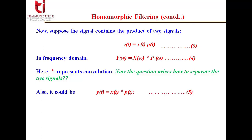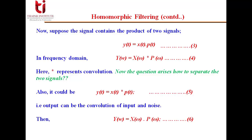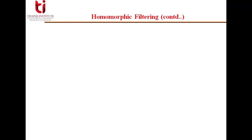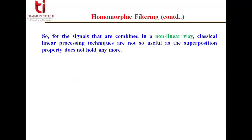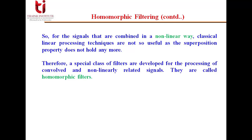Similarly, if two signals are convolving together — x(t) convolved with p(t) giving y(t) — then in the frequency domain this becomes multiplication. For signals combined in a non-linear way, classical linear processing techniques are not useful because the superposition property does not hold. Therefore, a special class of filters has been developed for processing convolved or non-linearly related signals, and they are called homomorphic filters.